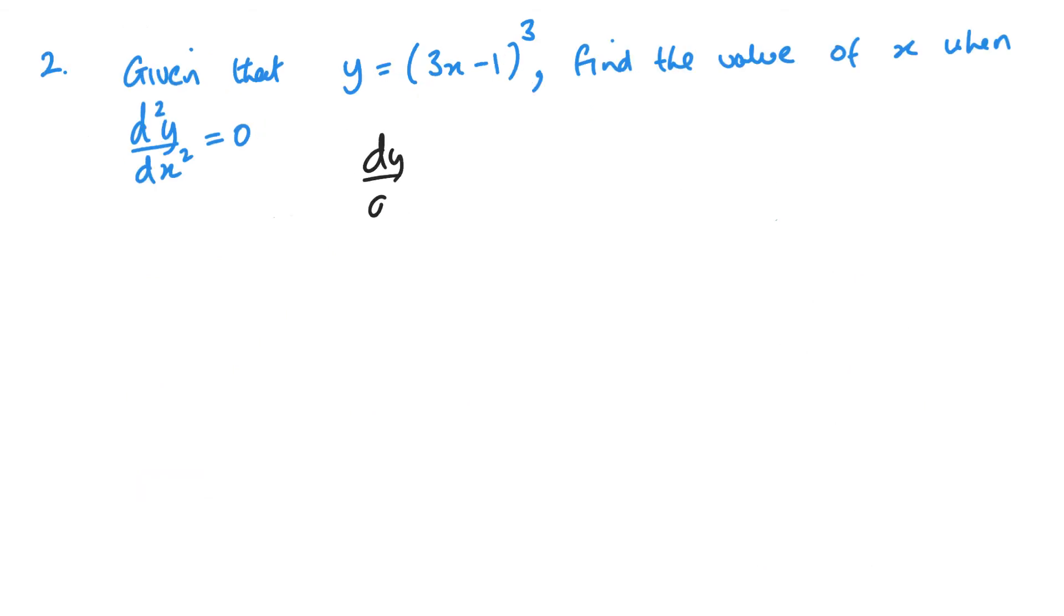So, differentiating here, bring down the power, 3 brackets, 3x minus 1 squared, multiplied by the inside of the brackets differentiated, which is 3. So, that gives me 9, 3x minus 1 squared.